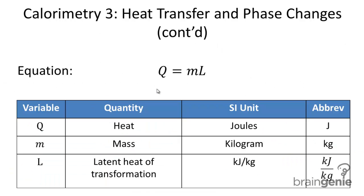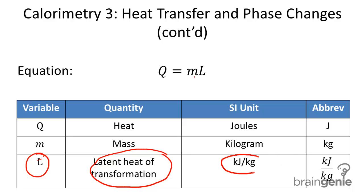Here's the formula you need to know. Q, the amount of heat, equals mass times the latent heat of transformation. The only new variable here is L, the latent heat of transformation, and that's given in kilojoules per kilogram — an amount of energy per mass.